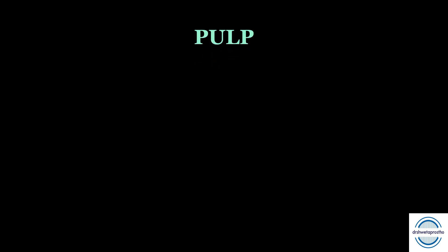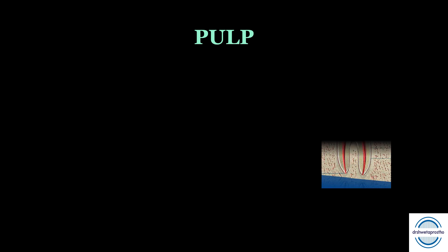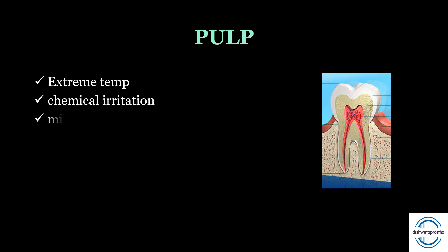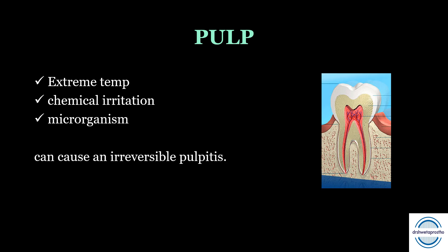Third is the dental pulp. When we are preparing a vital tooth, the dental pulp is very, very important. It can be easily damaged by three things: first, extreme temperature; second, chemical irritation; and third, microorganisms. All three can cause irreversible pulpitis to a vital abutment.